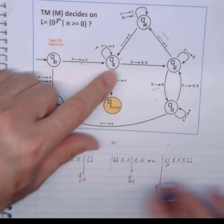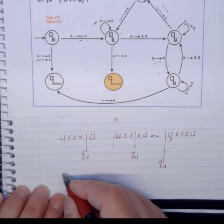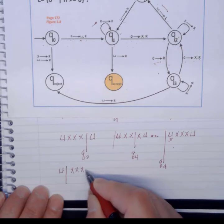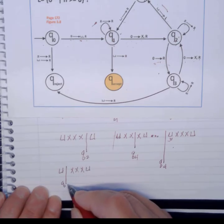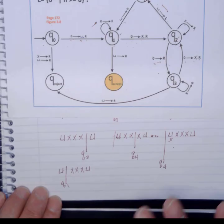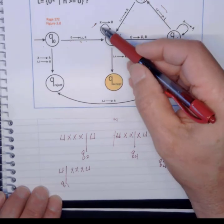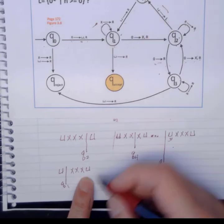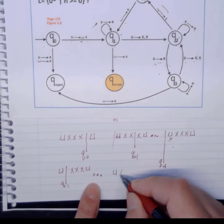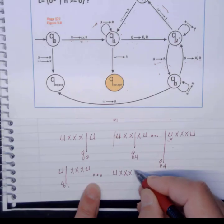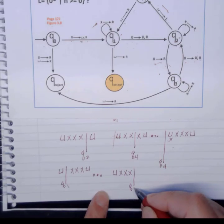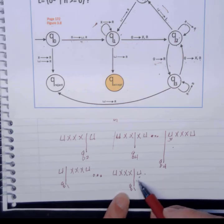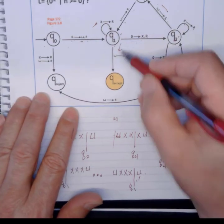At Q1, do I have a transition? Yes, I do. As long as I'm seeing Xs, I move all the way to the right. So I'm going to do dot, dot. And I'm still at Q1. And here's my blank. At Q1, do I have a transition on a blank? Because I'm seeing blank here. Yes, I do. The transition is to the acceptance state.